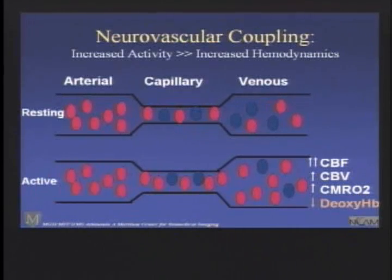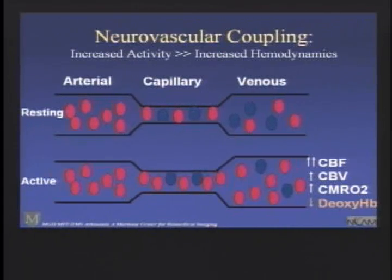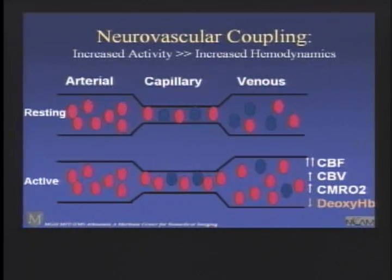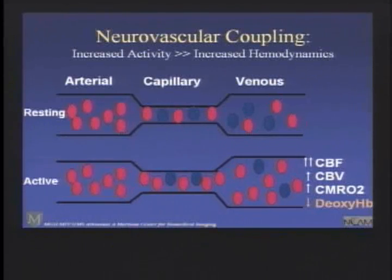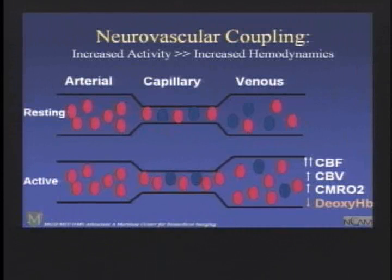There's a whole host of physiological changes that are occurring, including increases in blood flow, blood volume, and increases in oxygen consumption — although somewhat paradoxically, but quite important for much of the functional imaging that we do, because the delivery of oxygen via blood flow outstrips the increase in utilization of oxygen, the oxygen content of the blood actually goes up.